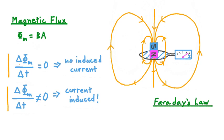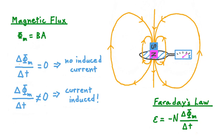Interestingly, Faraday's Law doesn't explicitly mention current, but it does describe EMF. EMF, or voltage, is a necessary precursor to current — no charge will flow in a loop, no current will exist in it, without an EMF across it. So Faraday's Law describes EMF, and it says it's equal to negative a constant N multiplied by the time rate of change of magnetic flux, delta phi sub m over delta t.